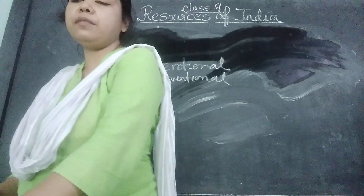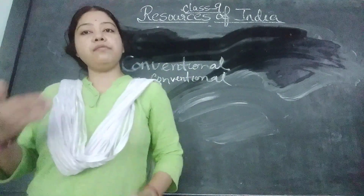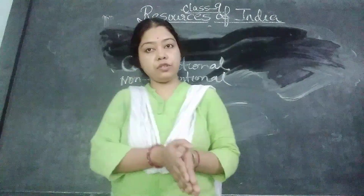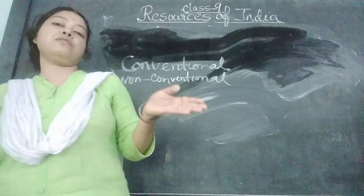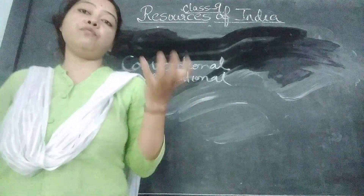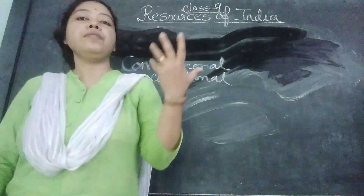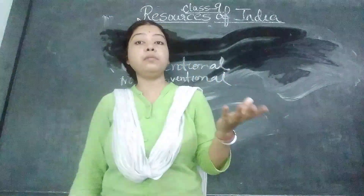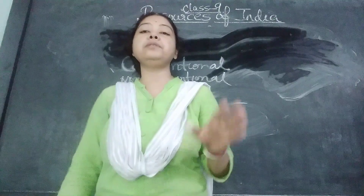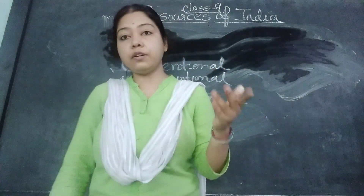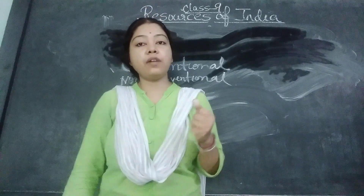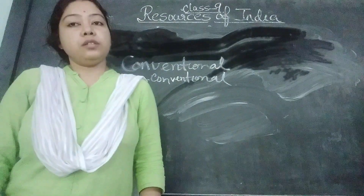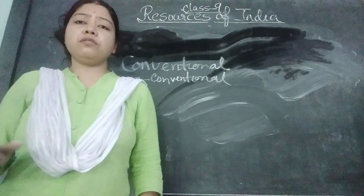Here we have to read about the differences between conventional and unconventional sources of energy. We are used to conventional sources of energy. These conventional resources are not easily available, whereas non-conventional sources are easily available. Conventional sources of energy are not eco-friendly — they cause environmental pollution. But non-conventional sources of energy are eco-friendly and they do not cause any pollution.